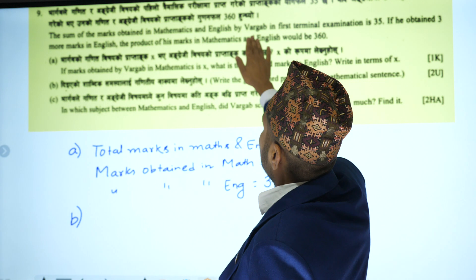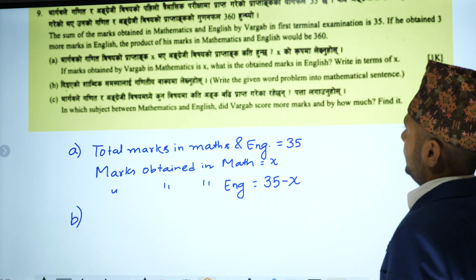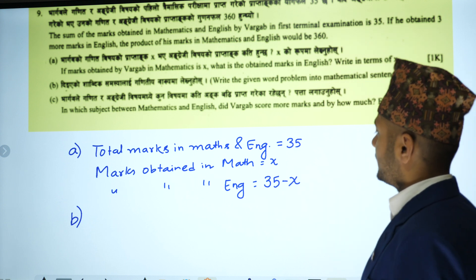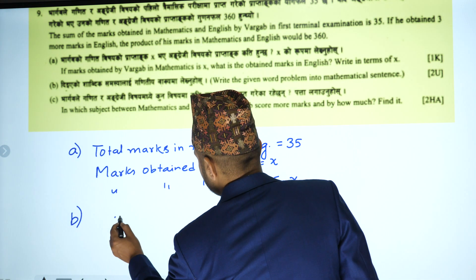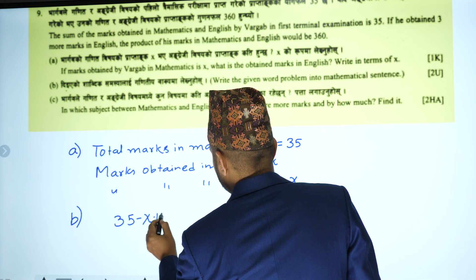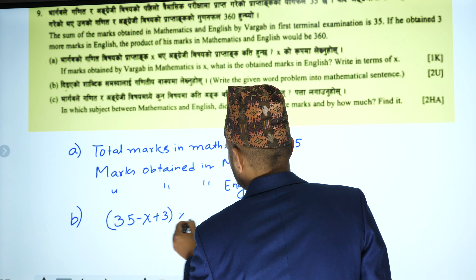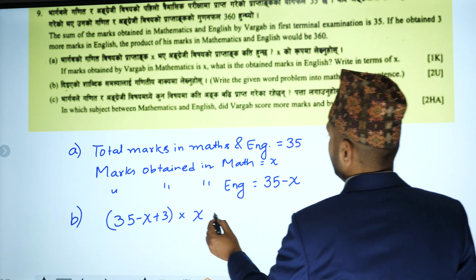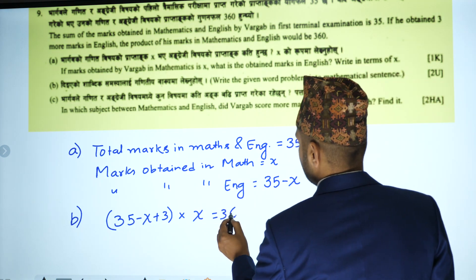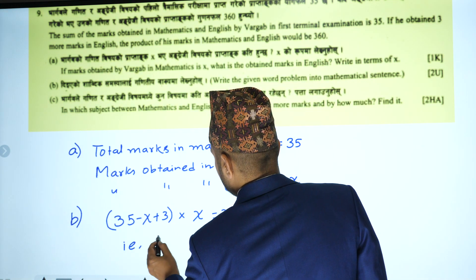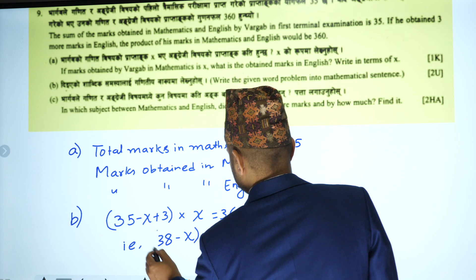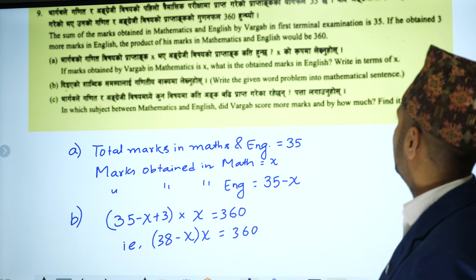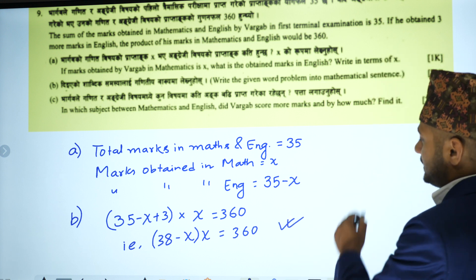The product of his marks in mathematics and English would be 360. If he gets 3 more marks in English, then English becomes 35 minus x plus 3. So the equation is: (38 minus x) into x equals 360.